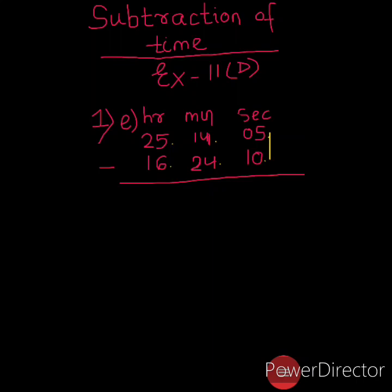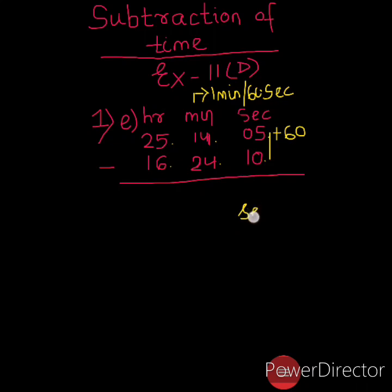Let's move on to the seconds group first. In the seconds group, 5 seconds minus 10 seconds is not possible, so we will borrow 1 minute from the minute group. 1 minute can be said as 60 seconds. So we borrowed 60 seconds from the minute group and this will be added with 5 seconds. Now the seconds group changes to 65 seconds.